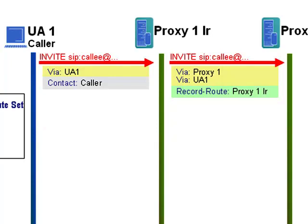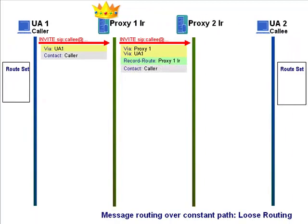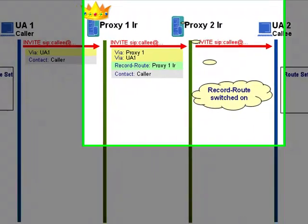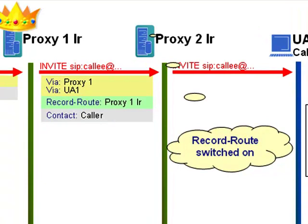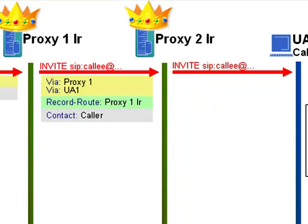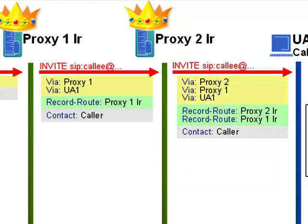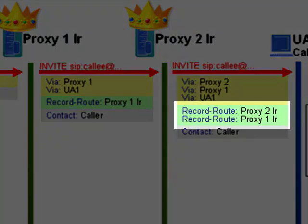It's almost as if Proxy 1 stands boldly and says, 'Hey, you guys — I'm the boss around here. Make sure you send me those subsequent requests, or you're in big trouble.' The same thing happens at server two: Record-Route is switched on, meaning server two also wants to stay in the signalling path and receive subsequent requests. He copies his own IP address into another Record-Route header, adding it to the top of what now becomes a Record-Route list.